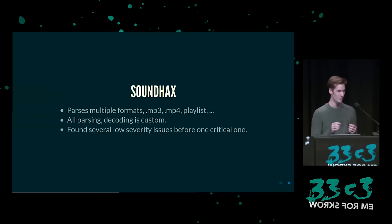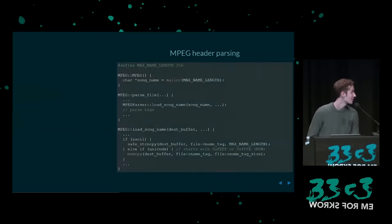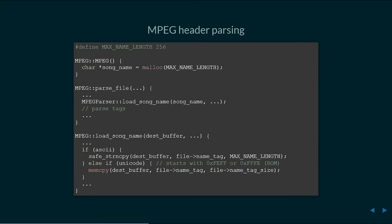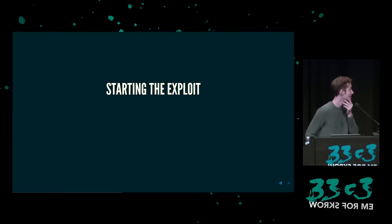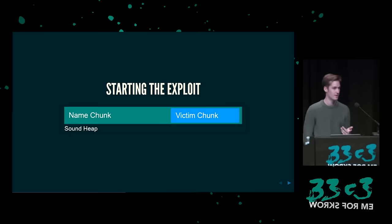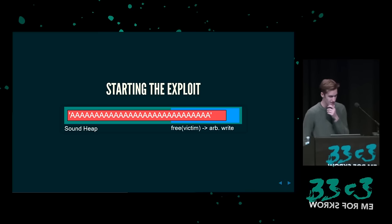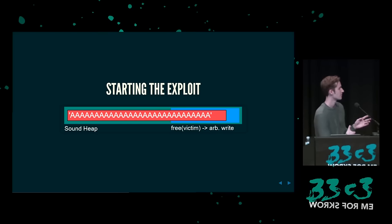Ich versuchte ein paar logische Bugs zusammenzuketten — das hat nicht richtig funktioniert. Das Nächste war dann sehr kritisch. Also, MPEG war das Letzte, was wir uns angesehen haben. Wir haben diesen ganzen Buffer für den Song, und wenn man zum Laden geht, wird der Unicode mem-copied. Tag-Size ist halt sehr kontrolliert — das ist ein ziemlich riesiger Overflow. So sieht es aus: wir haben unseren Name-Chunk, mit dem wir einfach overflowen wollen. Wir schreiben A's rein, das nächste wird befreit, und dieser Opfer-Chunk, den wir überschreiben — wie der DS-Heap funktioniert: da ist eine Liste, die zeigt, wo alles hinzeigt.